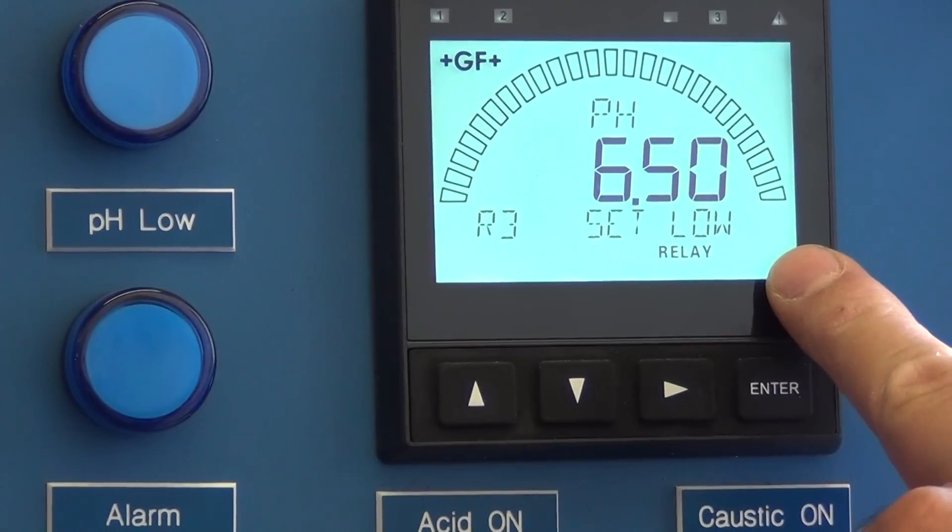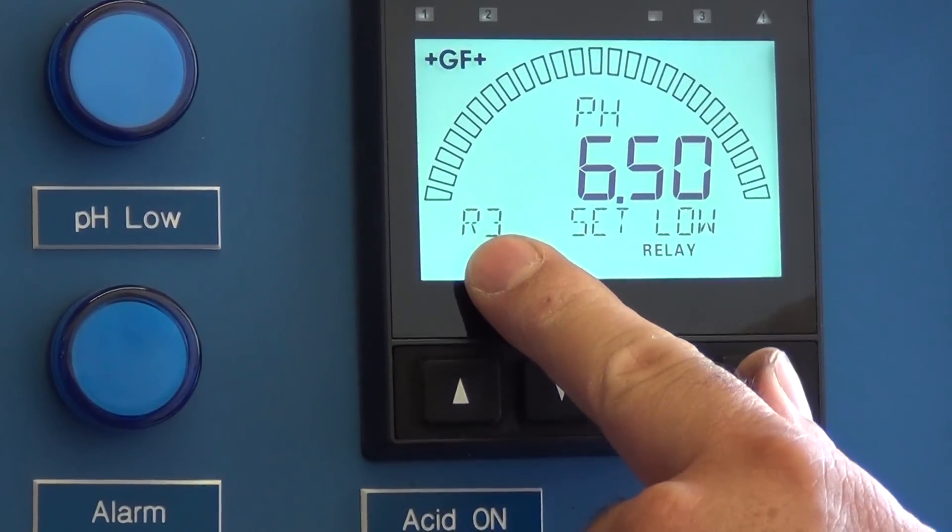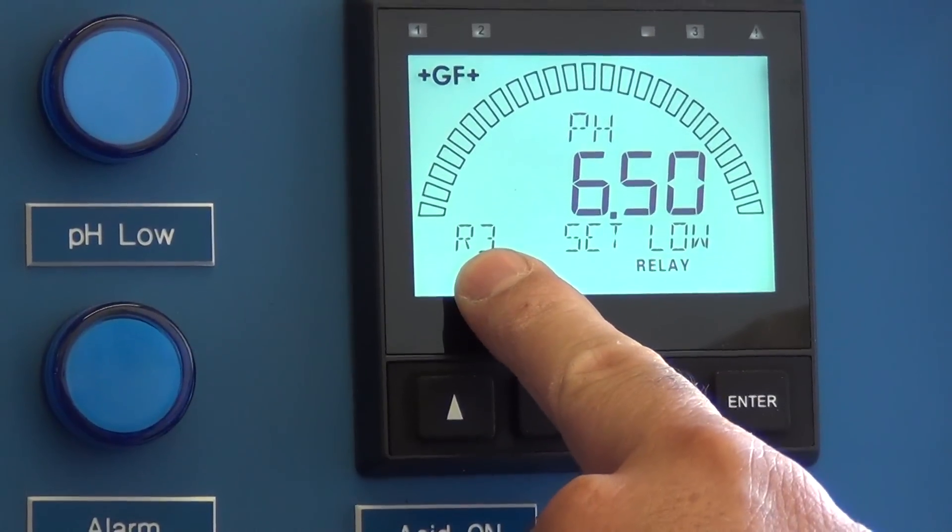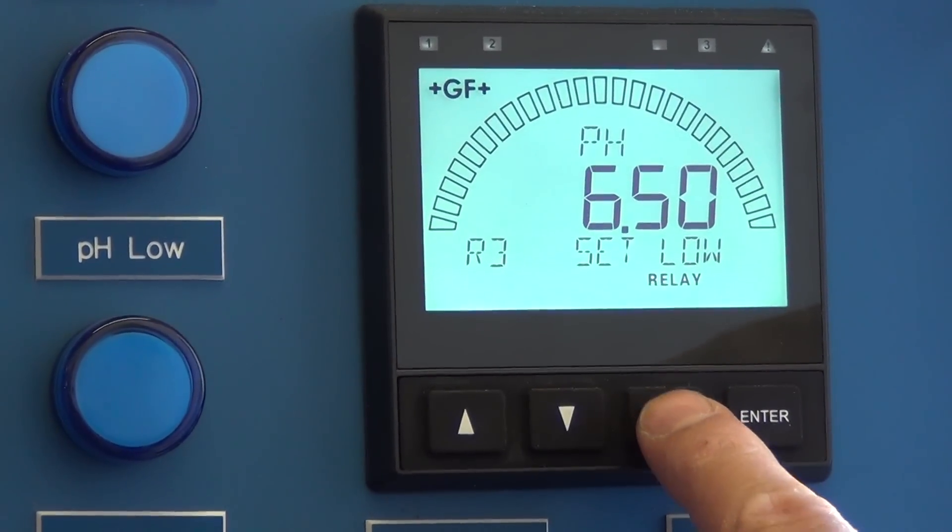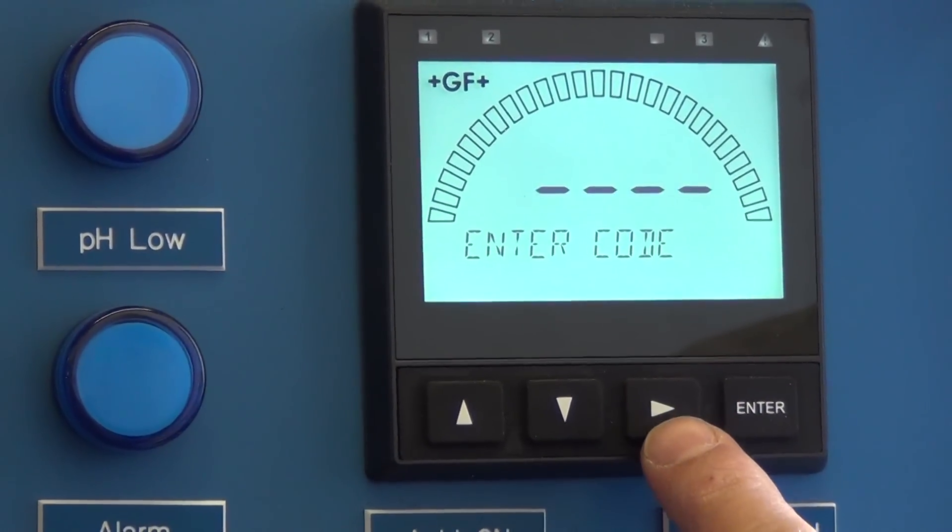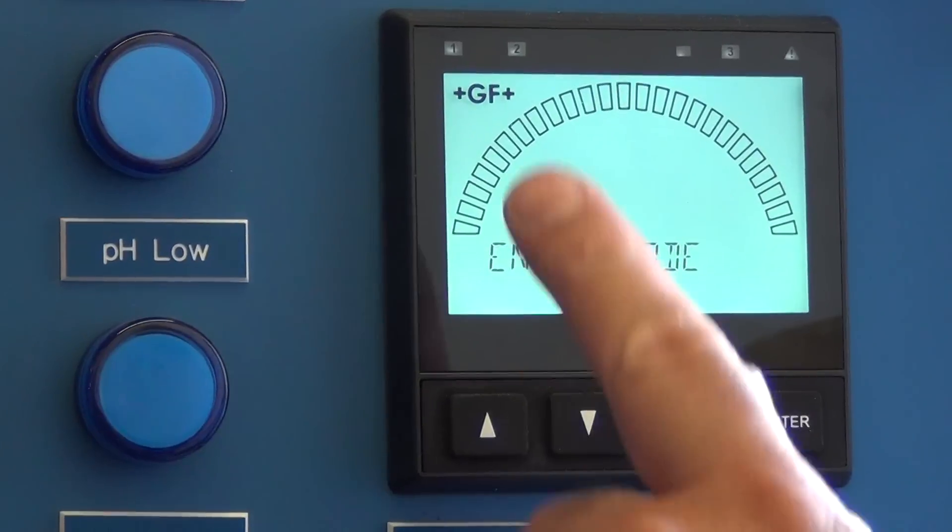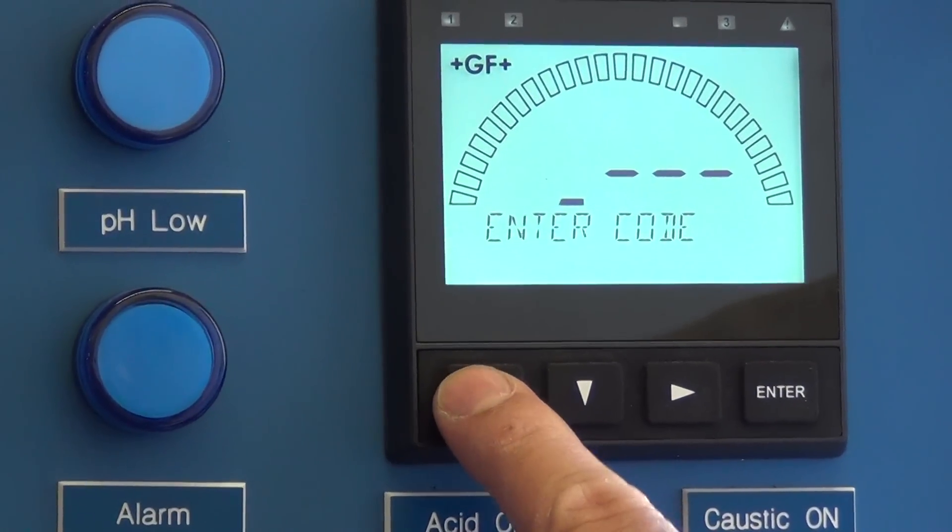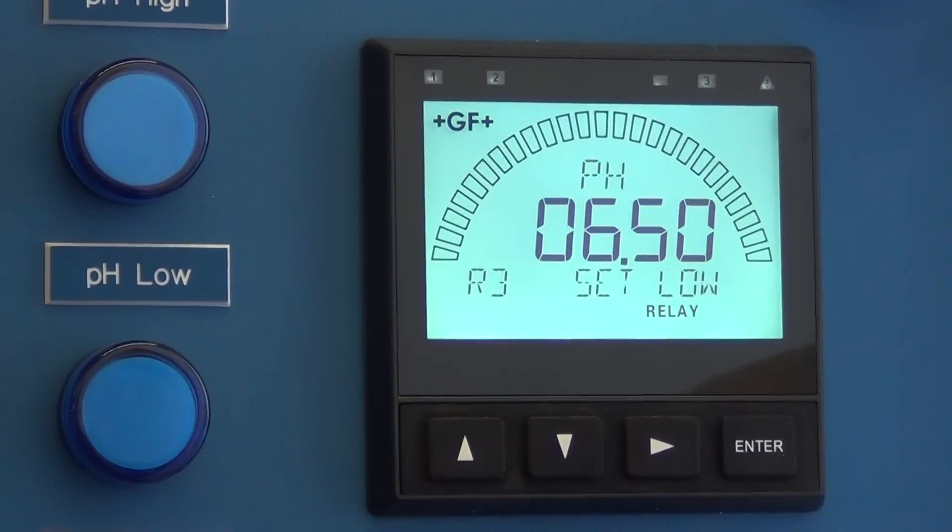We want to go to this screen for R3, then we want to press and hold the right arrow, then enter the code. Default code is up, up, up, down.